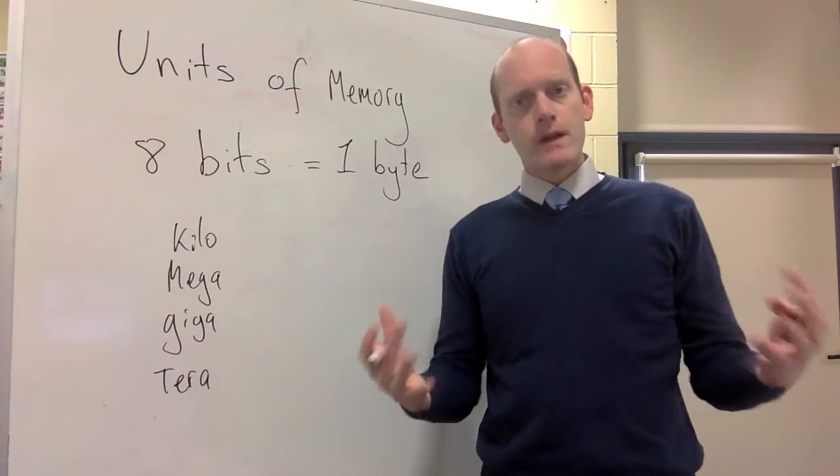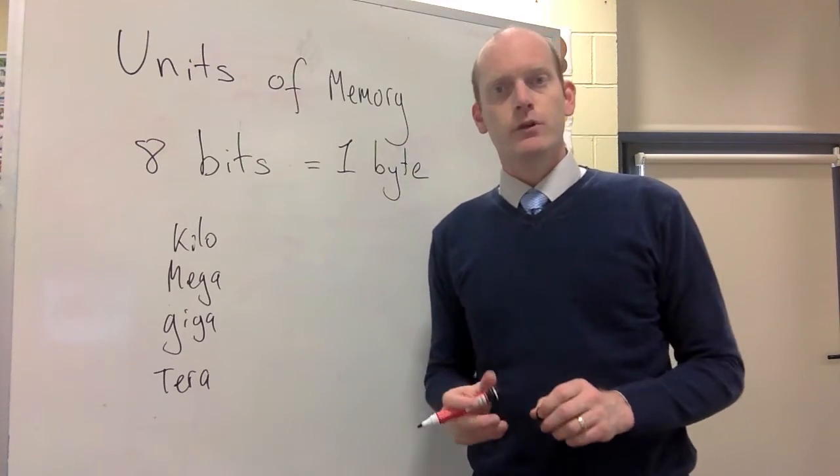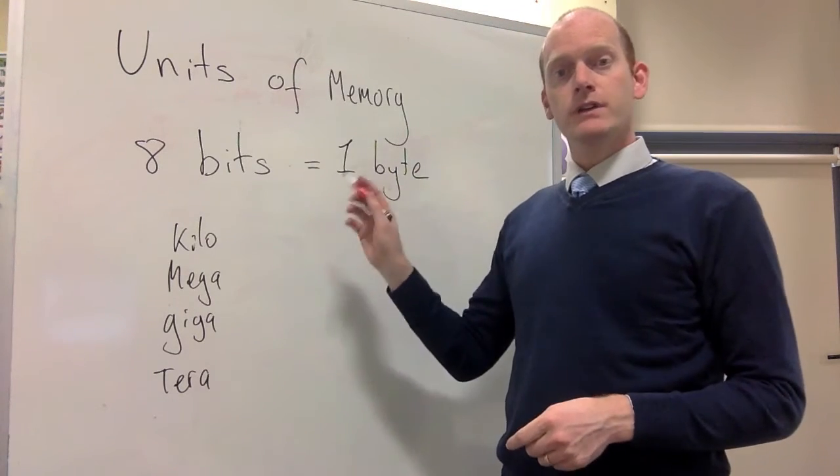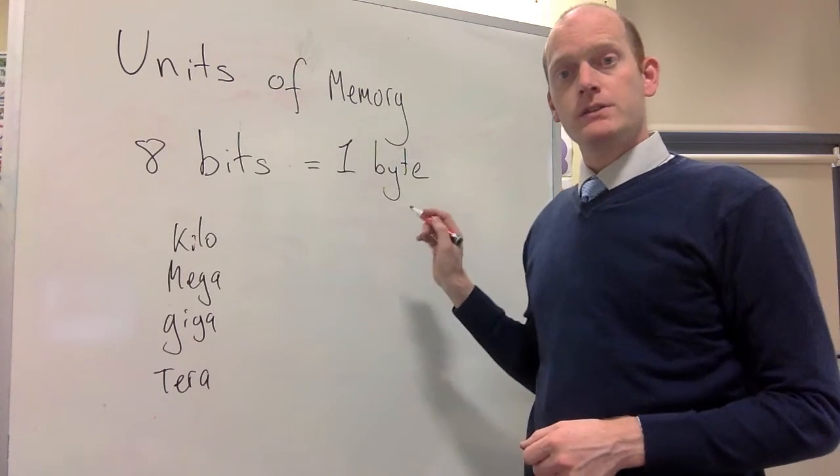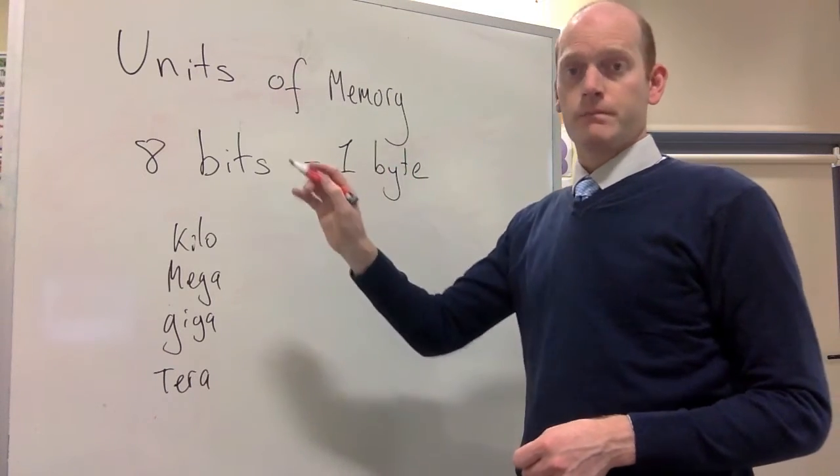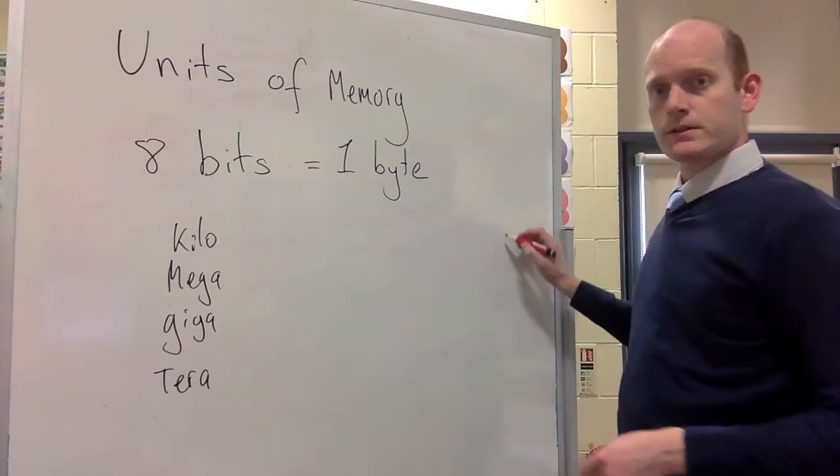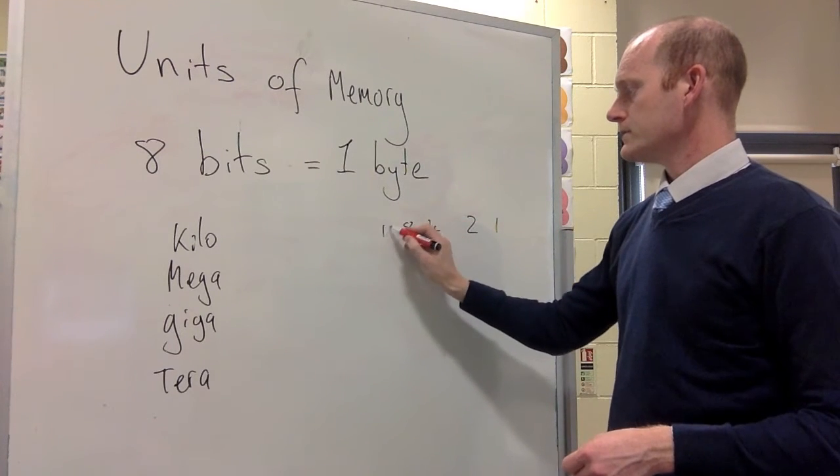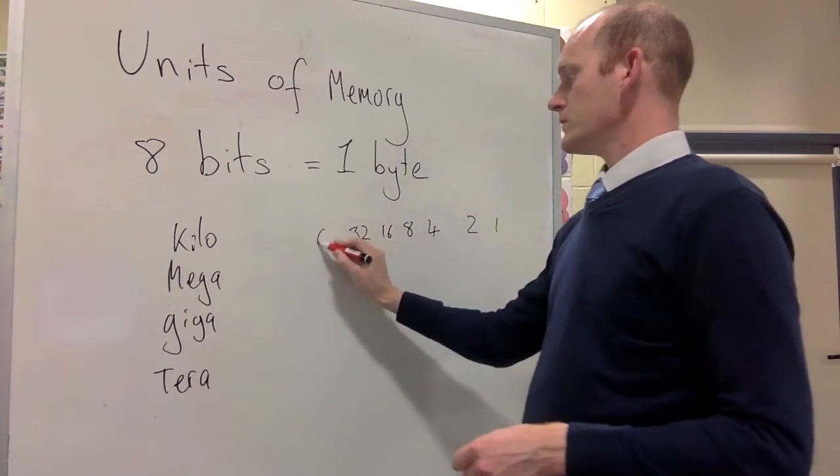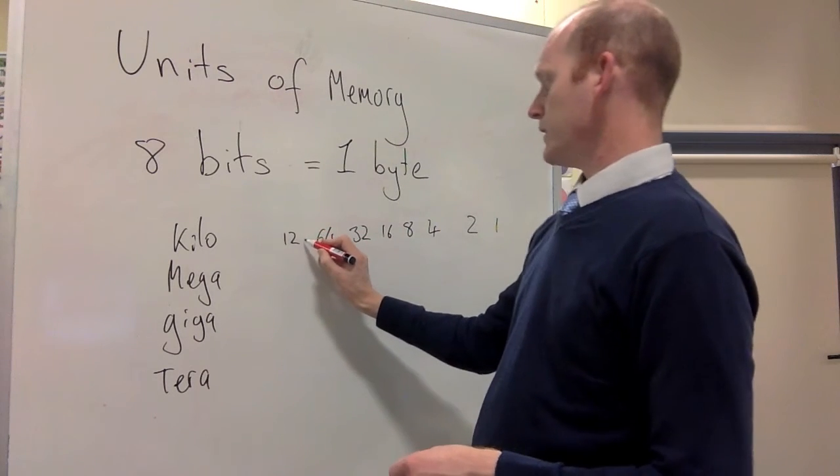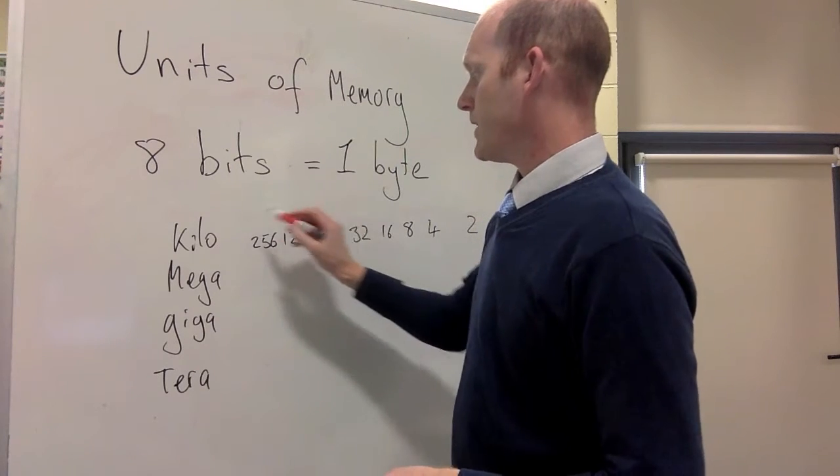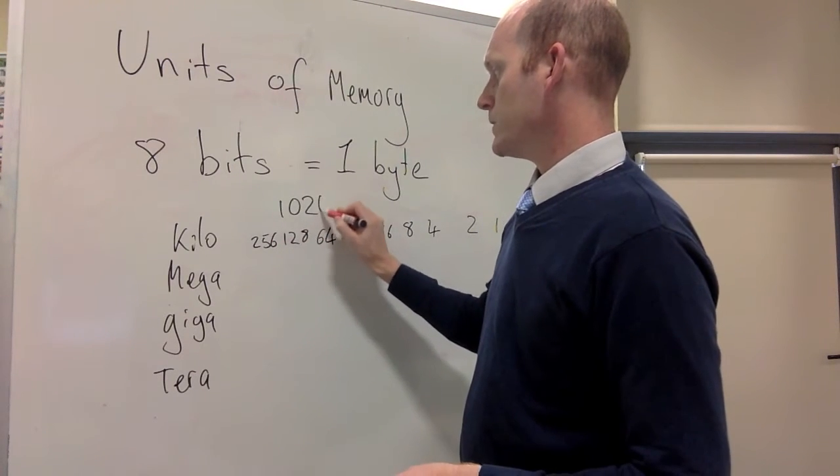Now this has been a cause of great big arguments in the computer world for a long time, because actually when we're using binary code and counting in base two, we go up in powers. So we've already seen in the past that we go from 1, 2, 4, 8, 16, 32, 64, 128, 256, and then the magic number, 1024.